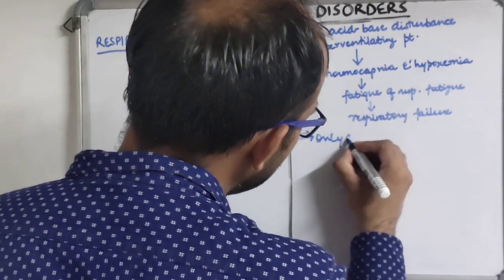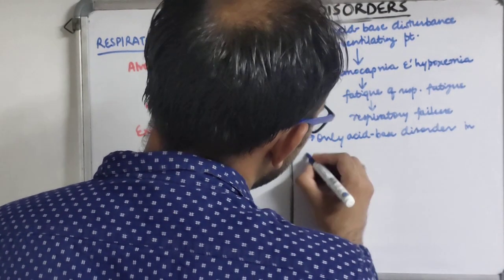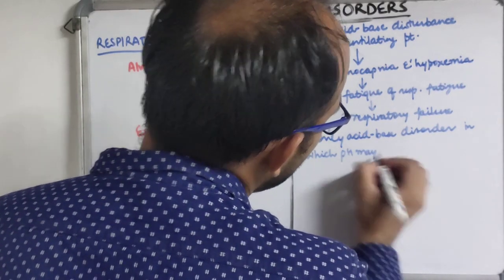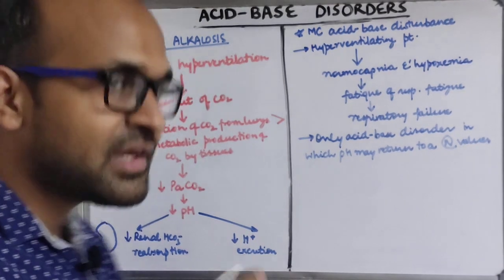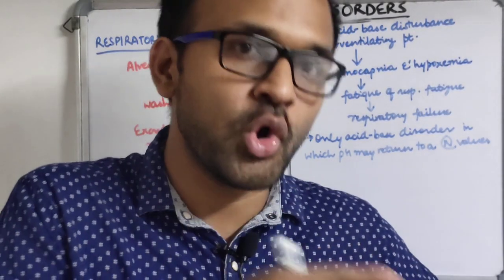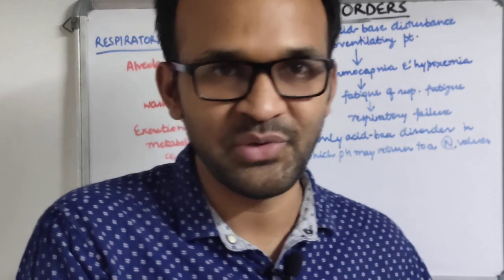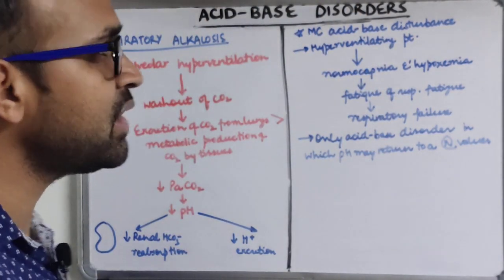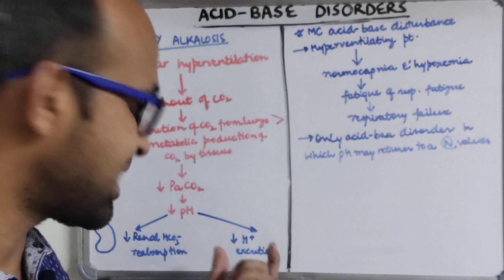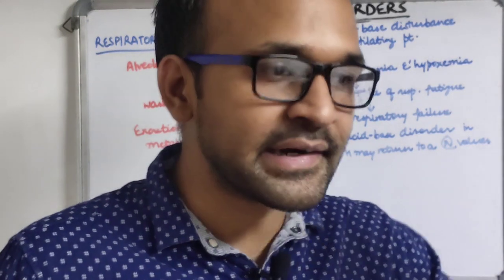An important unique feature: respiratory alkalosis is the only acid-base disorder in which pH can return to a normal value. In all other acid-base disorders, the pH tends to move towards normal but never reaches it. Only in respiratory alkalosis can it actually reach a normal value.